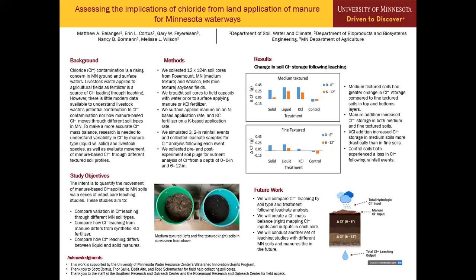When we collected soil cores from the field, we collected initial soil plugs as a baseline nutrient analysis, and then following the three wetting events, we collected soil plugs from each individual core for a post-experiment chloride nutrient analysis. All soil plugs were at a depth of 0 to 6 inches and then 6 to 12 inches to see how chloride moves through the soil profile. As you see here in this picture, on the left we see medium textured soil and on the right we see the fine textured soils, showing the variability in how the soil looks and how there's more leaching in the fine textured soils on the right.